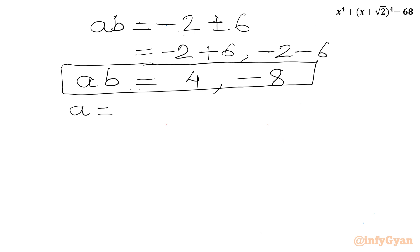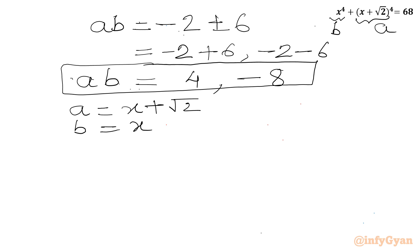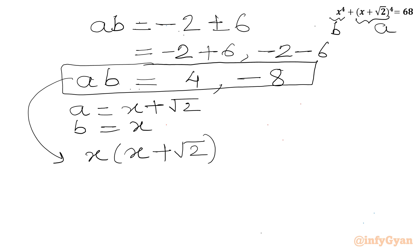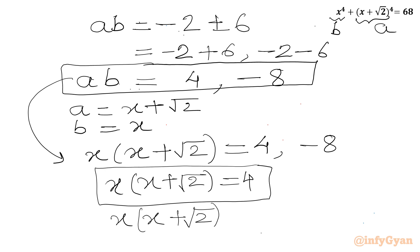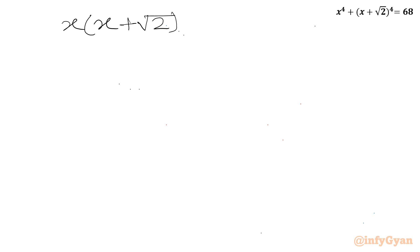These are the values of ab. Since a = x + √2 and b = x, we can write: x(x + √2) = 4 and x(x + √2) = -8. Let us solve each separately.